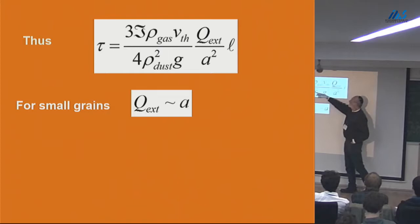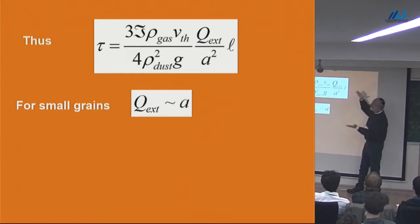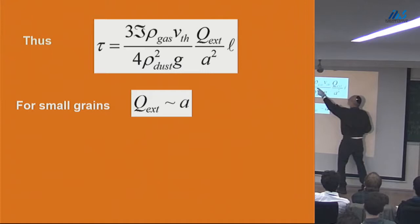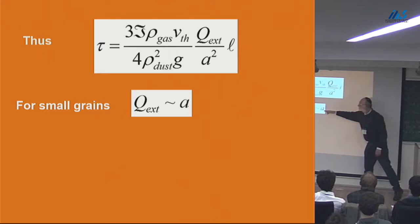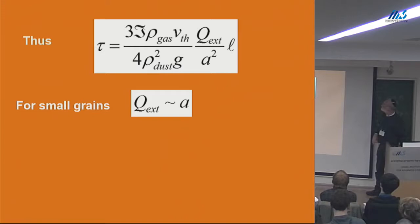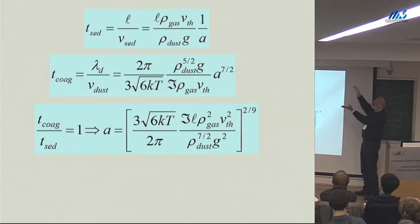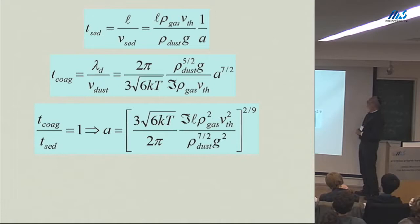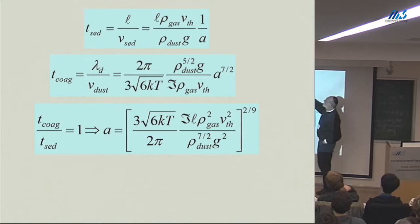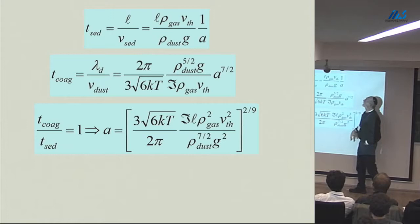The optical depth can be tied to the flux. If you know the number of grains, the cross-section, and so on, and you have some region L, you can get the optical depth of the grains in that region given the flux assuming steady state. For small grains, Q-extinction is proportional to a; for larger grains, it's a constant. You can then do something interesting: the grains could move around by Brownian motion or bigger grains overtaking smaller ones and growing, then falling out. The timescale for sedimenting is just the time to get through layer L, and the timescale for coagulation is the mean-free path between grains divided by the thermal Brownian speed.